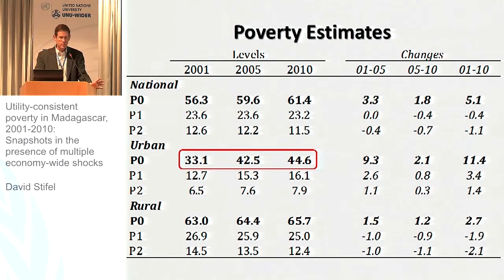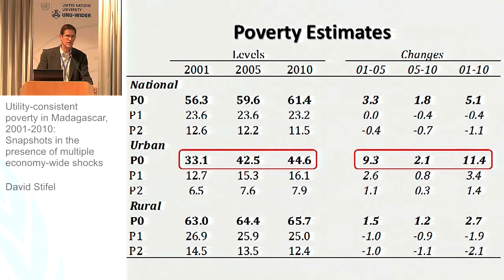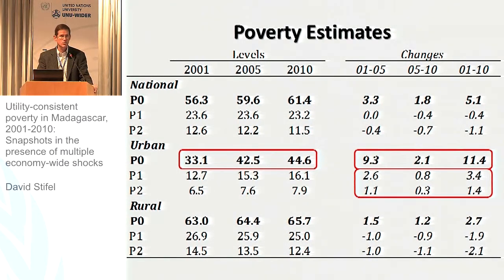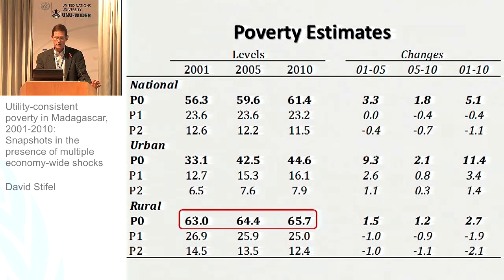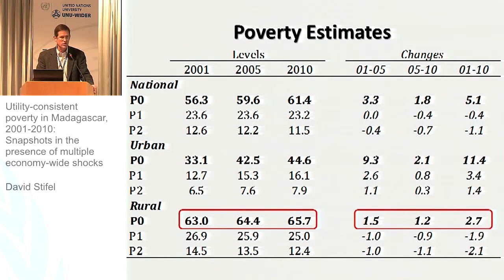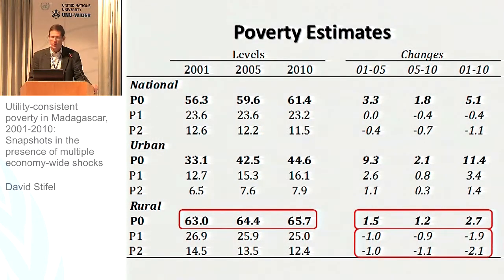When we turn to urban areas, poverty has risen considerably, again in the first half of the decade, and the more distribution-sensitive measures also record an increase in poverty. In rural areas, the levels are higher certainly, but the increases are not quite as large as in the urban areas. In fact, if we look at the distribution measures of poverty, there seems to be a decline.